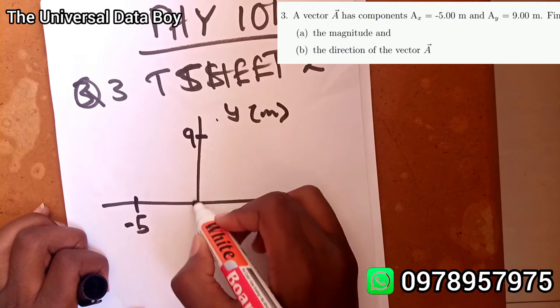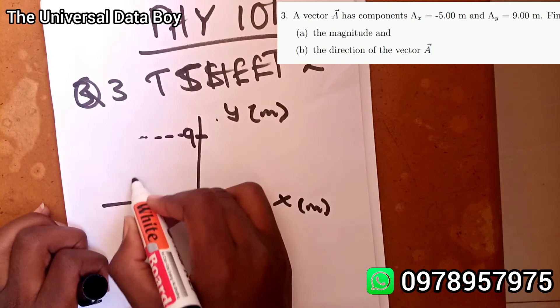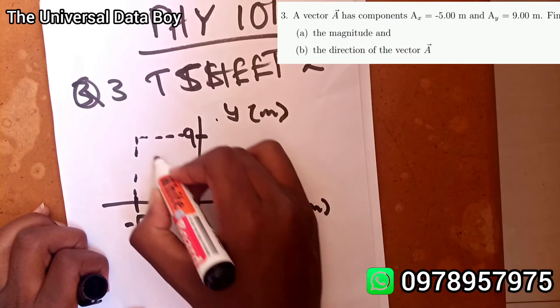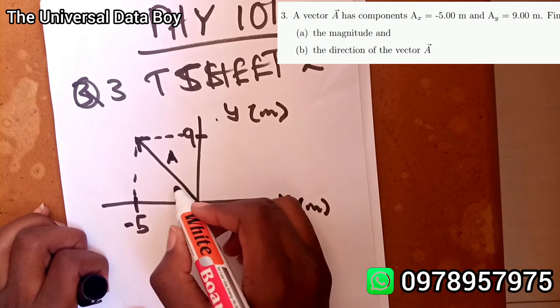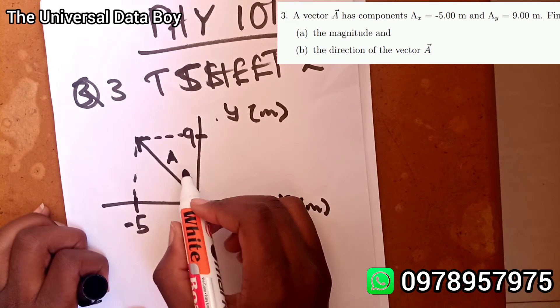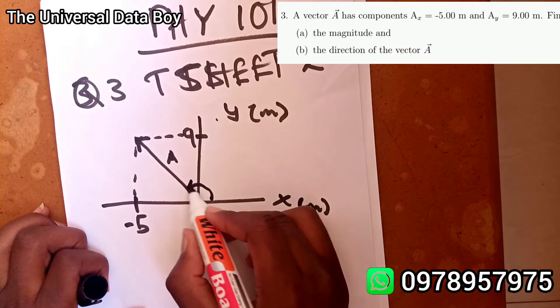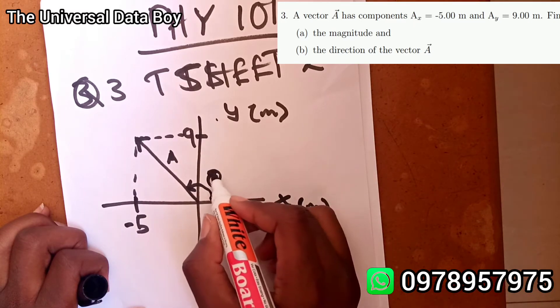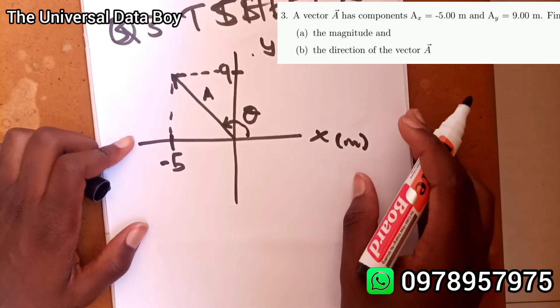In the y-axis it goes all the way up to 9, positive 9. So this is the x component and this is the y component. So now this vector is like that. I've been told to find the magnitude of this A as well as the direction. The direction will be the angle with respect to the x-axis, the theta.